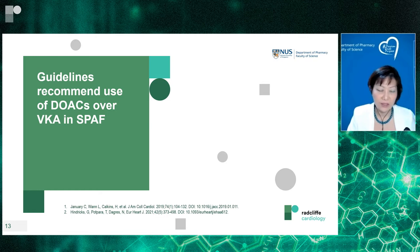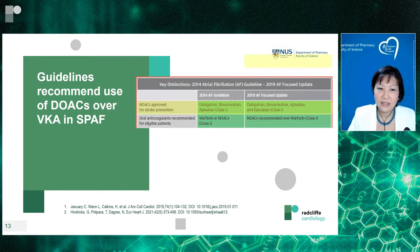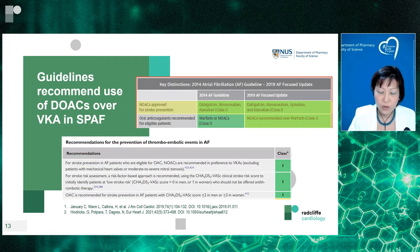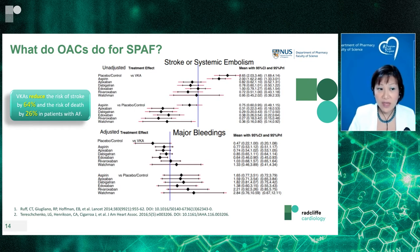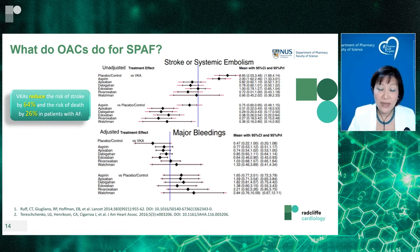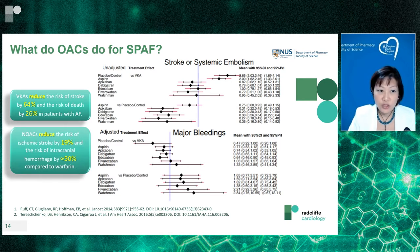Guidelines now recommend DOACs over VKAs in SPAF. The landmark randomized controlled trials have shown favorable outcomes regarding safety compared to warfarin — consistent across European and American guidelines. VKAs reduce stroke risk by 64% and risk of death from AF-related stroke by 26%. The DOACs additionally reduce ischemic stroke risk by 19% and halve the risk of intracranial hemorrhage by 50% compared to warfarin.